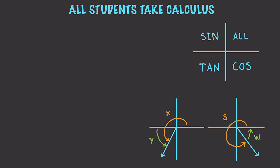To find y, you subtract 180 (or pi) from x, so y equals x minus 180. And in the other example, to find w, you subtract s from 360.